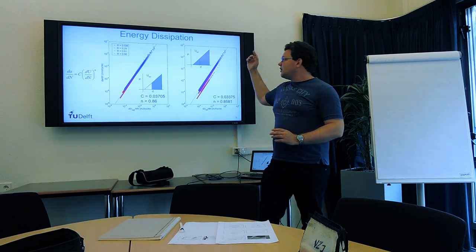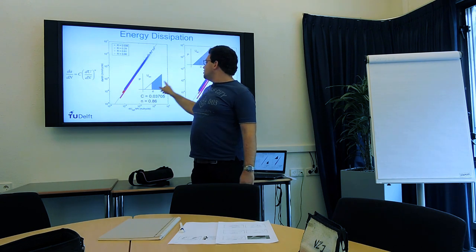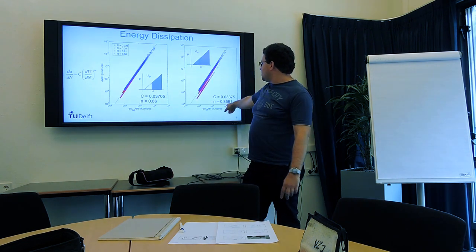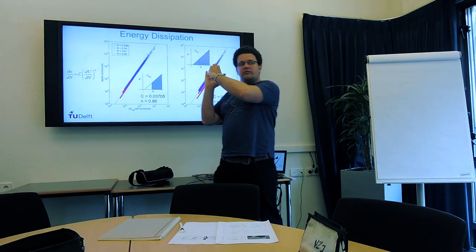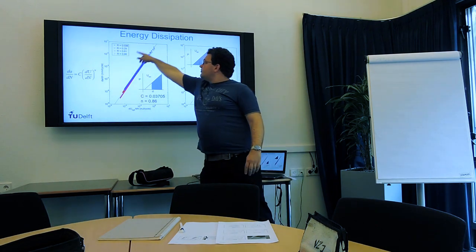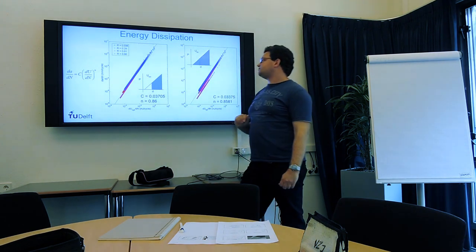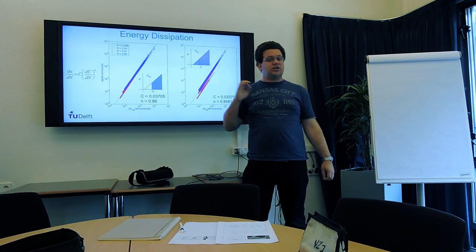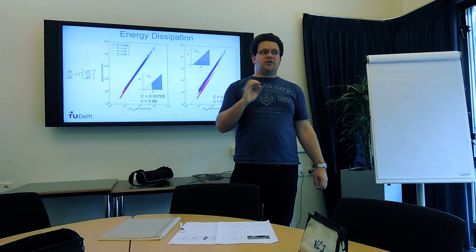And then we can plot those against each other. Then we get this. So whether we look against the dissipation of purely the cyclic energy, so just this portion, or the dissipation of the total energy, you get a nice narrow band of all the curves lining up. Even for different R ratios, they all line up along one line. So there's a very strong correlation indeed, as you would expect, between the energy dissipation and the crack growth rate.